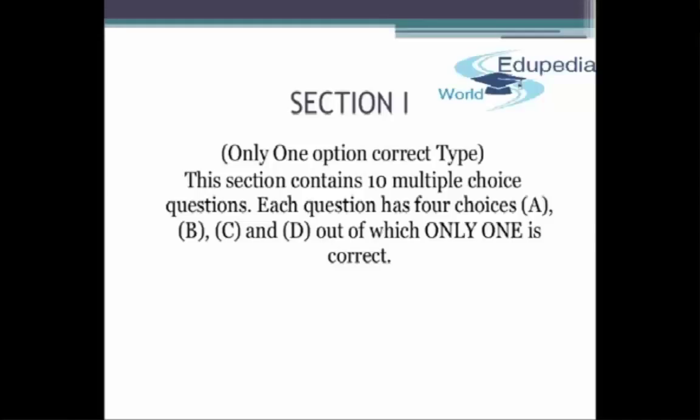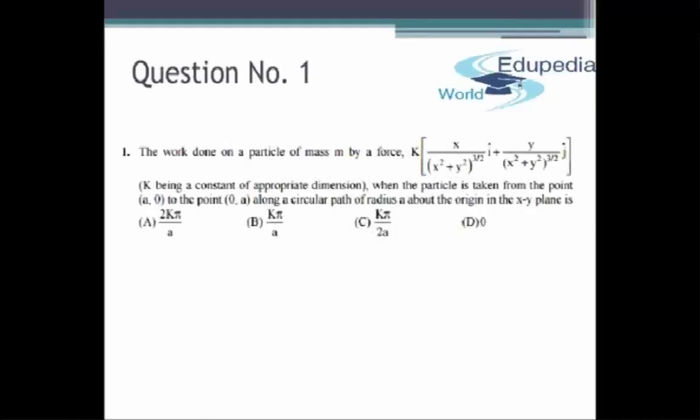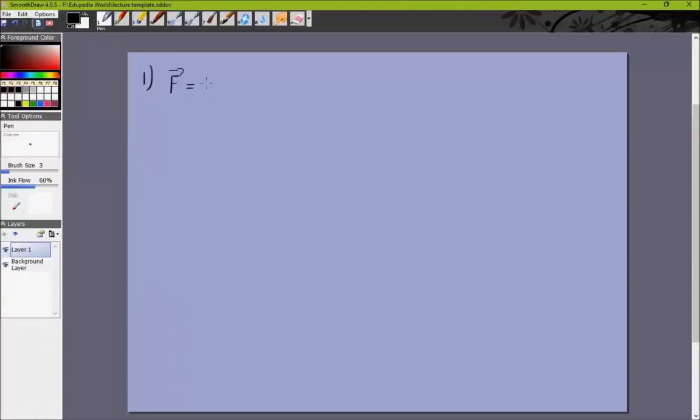Question 1 is a particle of mass M being acted on by a force which is K times [X i cap plus Y j cap] by (x² + y²)^(3/2), and it is being taken along the Cartesian plane from the point (a, 0) to the point (0, a) along this circular path.